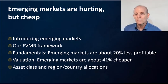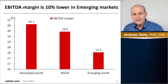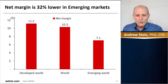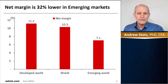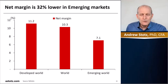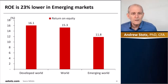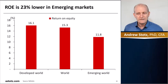Starting with fundamentals, emerging markets are about 20% less profitable than developed markets. The EBITDA margin for the world is at about 19%, and it's 17.5% for emerging markets — about 10% lower. Net margin is 32% lower in emerging markets: the world is earning a 10% net margin while the emerging world is earning a 7% net margin. The world is at a super high level — the long-term average is about 6% — driven particularly by the U.S. Return on equity is 23% lower in emerging markets: about 15% for the world versus 12% for emerging markets.